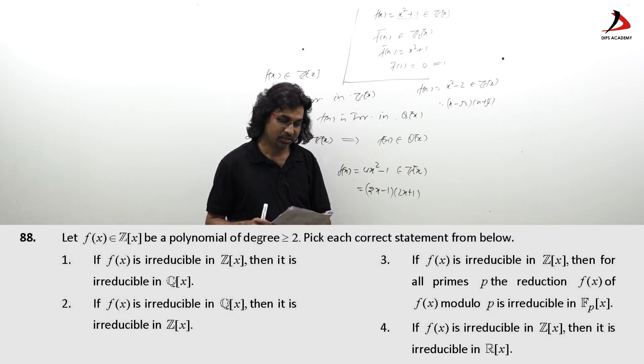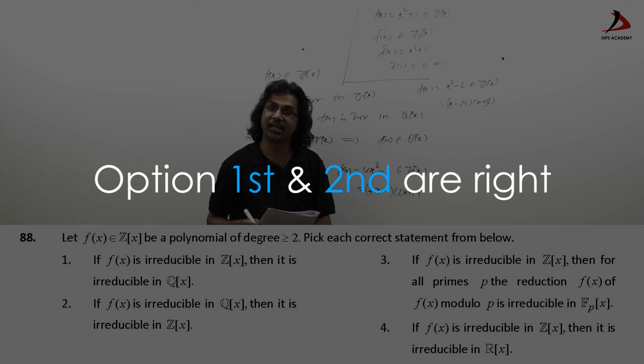So, this question if we consider as they are asking irreducibility of a polynomial first and second are correct and third and fourth are incorrect. Thank you.